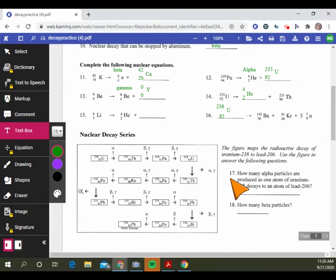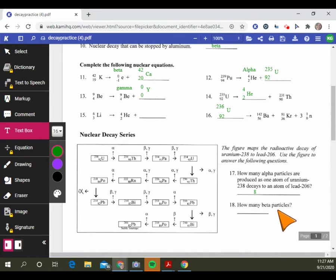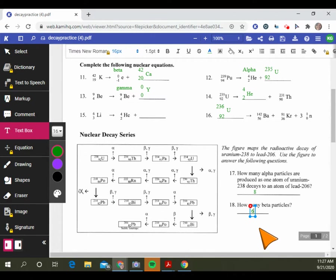What these questions are asking you to look at is how many alpha particles are produced as one atom of uranium-238 decays to an atom of lead-206. We're just going to count the alphas. Here's an alpha: 1, 2, 3, 4, 5, 6, 7, 8. So we click 8 there. How many beta particles? You just count the betas: 1, 2, 3, 4, 5, 6.